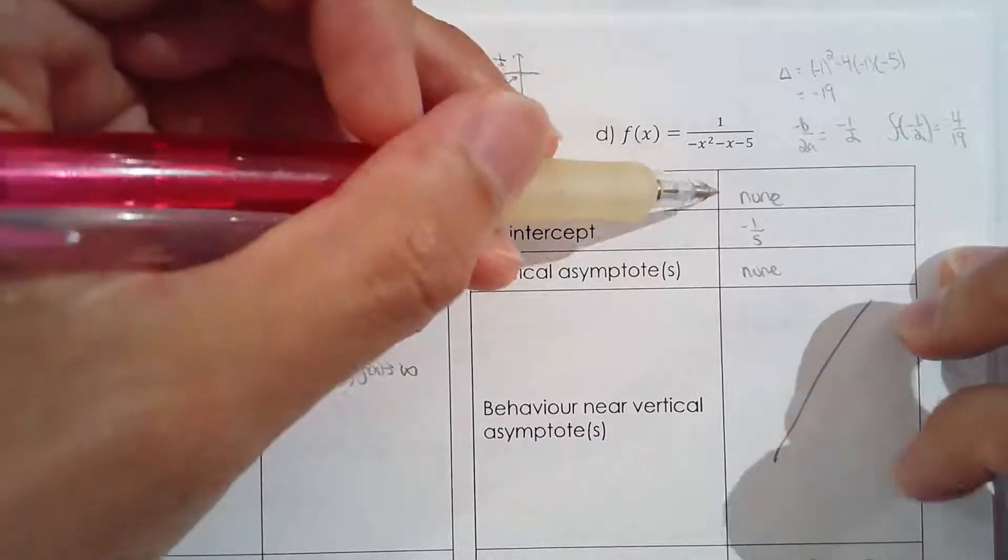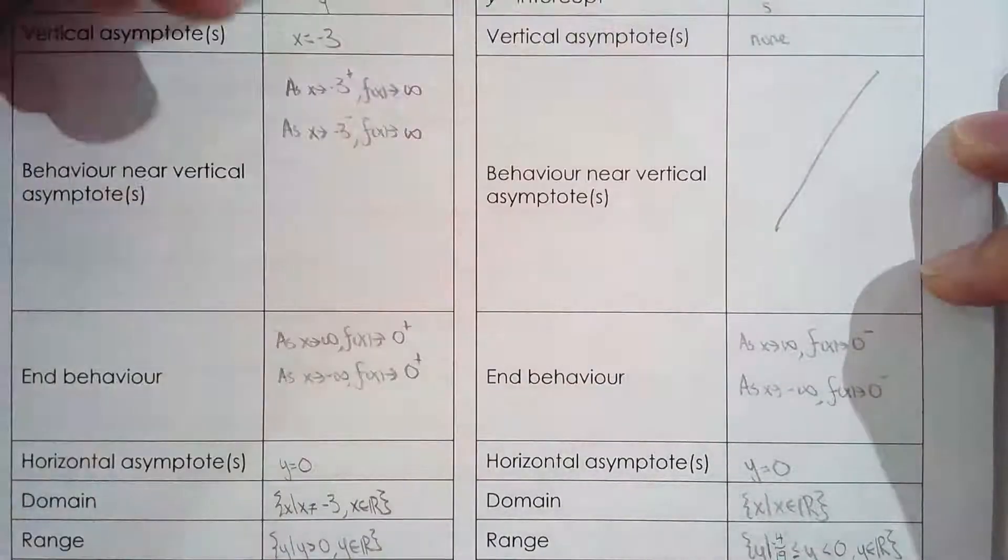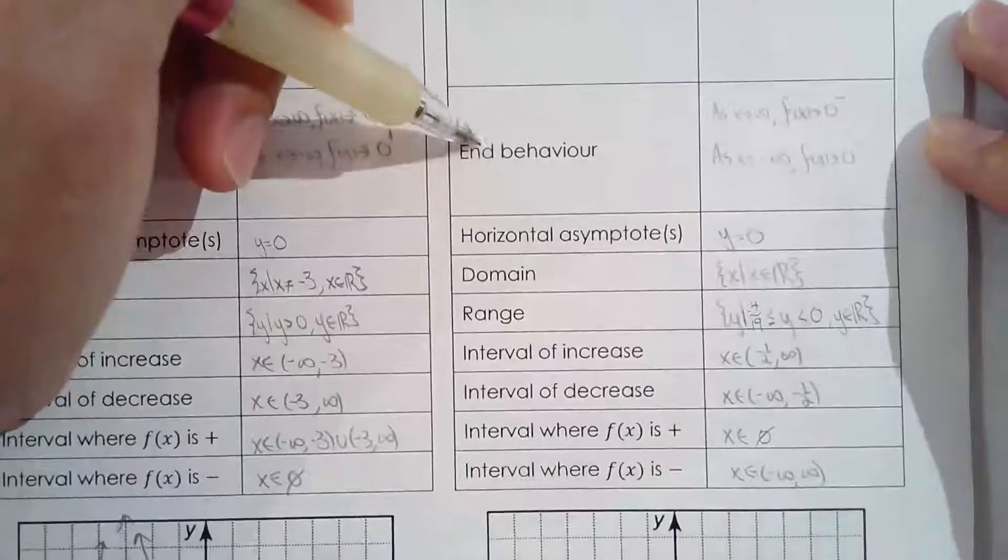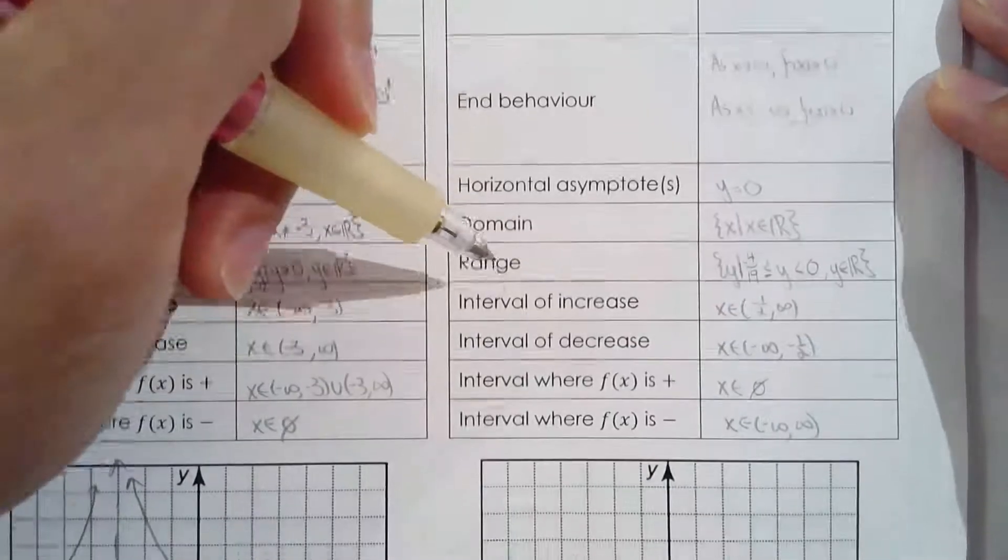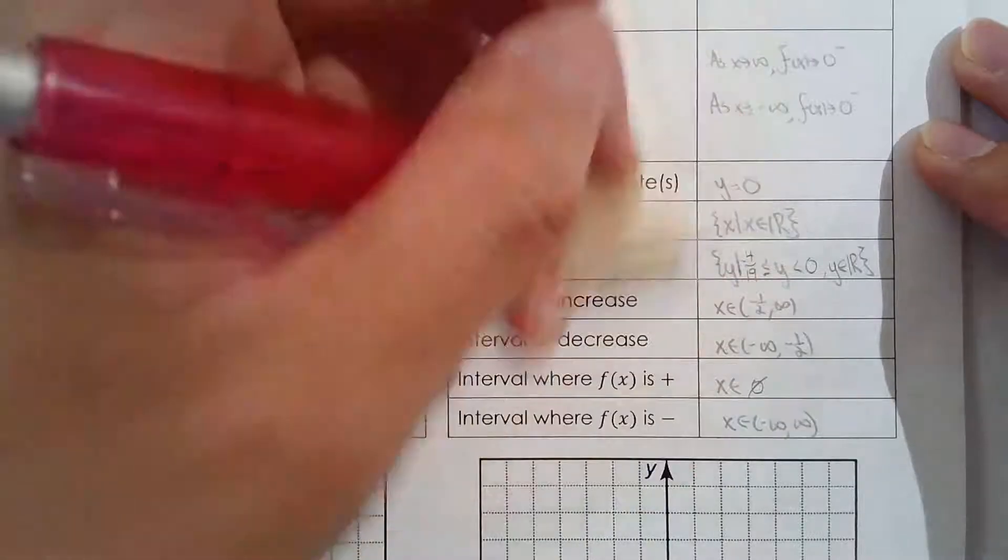Alright, so x-intercept none, y-intercept, no vertical asymptote, beautiful. That means I can't talk about the behavior near the vertical asymptote. I can still talk about end behavior though. I know the horizontal asymptote, domain, range, increase, decrease, increase, where is it positive, where is it negative, all this I got it from the graph.